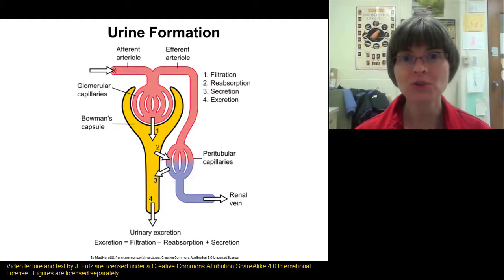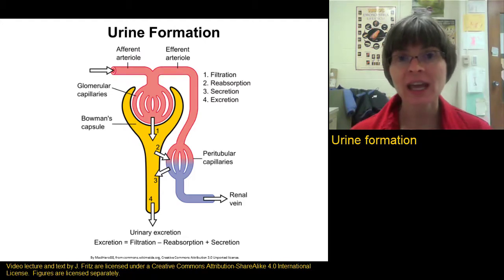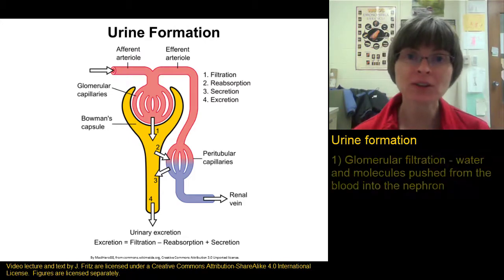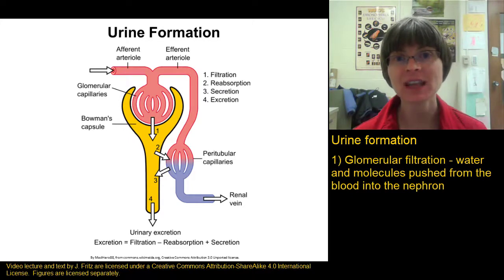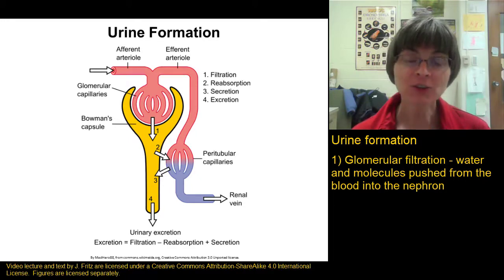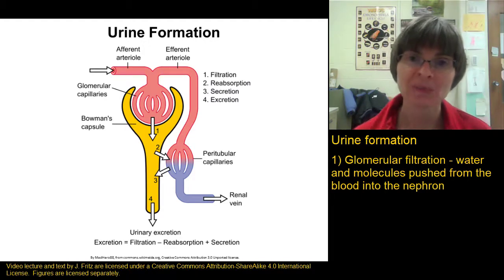Let's look at an overview of urine formation. We already talked about the importance of bringing blood into the nephron. Then we have glomerular filtration, where molecules are pushed out of the glomerulus and into the capsular space. That filtrate containing water and nutrients, as well as wastes, all goes into the renal tubule.